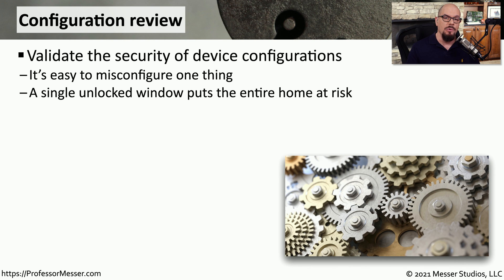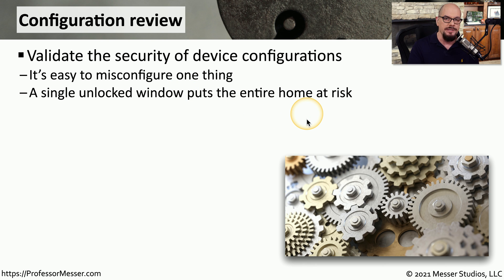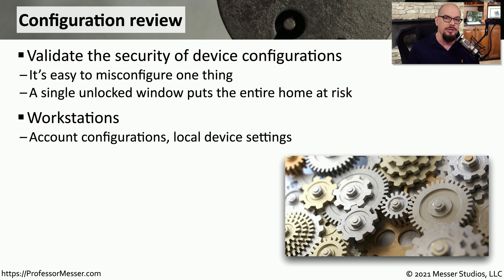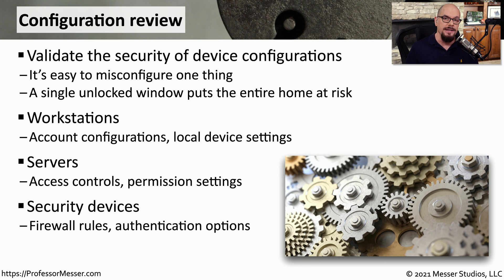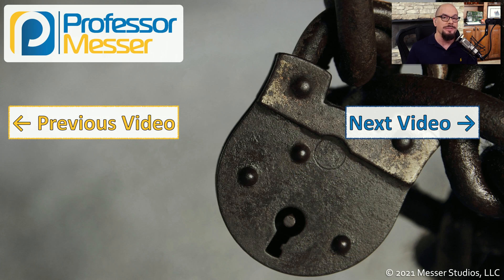There are a number of vulnerabilities you can look for without using a formal vulnerability scanner. For instance, you could do a configuration review of an operating system to see if there may be any obvious security issues. You may want to validate the security settings on a device — it's easy to log into the device and see what the firewall settings might be, or see if antivirus has been updated recently. You could look at workstations and see what the account configurations are, making sure nobody has turned on any security shares that might put the entire device at risk. On servers, we are concerned with access control and the permissions of users connecting to that server. And we want to look at our security devices themselves and make sure we haven't misconfigured a firewall rule to allow access when we really wanted to deny access.